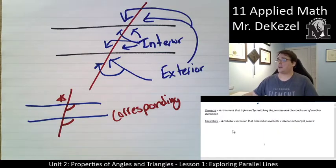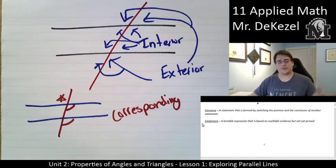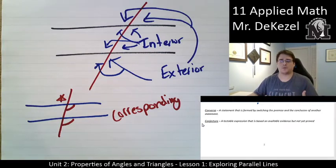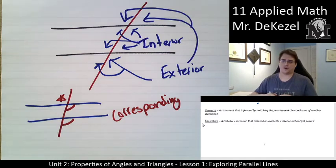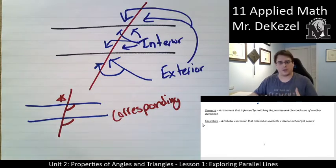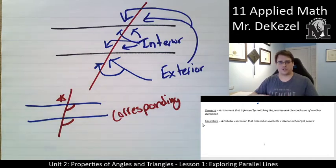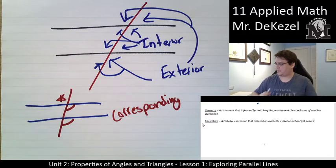One last thing: a conjecture — and this is a term that will be used throughout the course. A conjecture is a testable expression that is based on evidence but is not yet proved. So if we make an observation and we explain why we think it's true, but it's not a proven reason, that would be a conjecture. We'll make conjectures throughout the course and then we'll attempt to prove them.